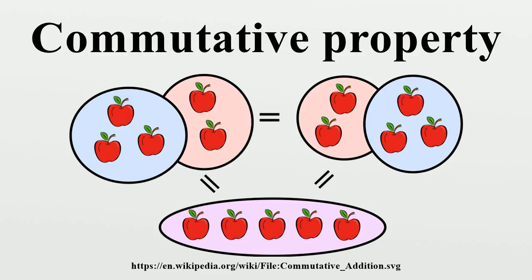Commutativity of conjunction, commutativity of disjunction, commutativity of implication, and commutativity of equivalence. In group and set theory, many algebraic structures are called commutative when certain operands satisfy the commutative property. A commutative semi-group is a set endowed with a total, associative, and commutative operation. If the operation additionally has an identity element, we have a commutative monoid. An abelian group, or commutative group, is a group whose group operation is commutative. A commutative ring is a ring whose multiplication is commutative. In a field, both addition and multiplication are commutative.